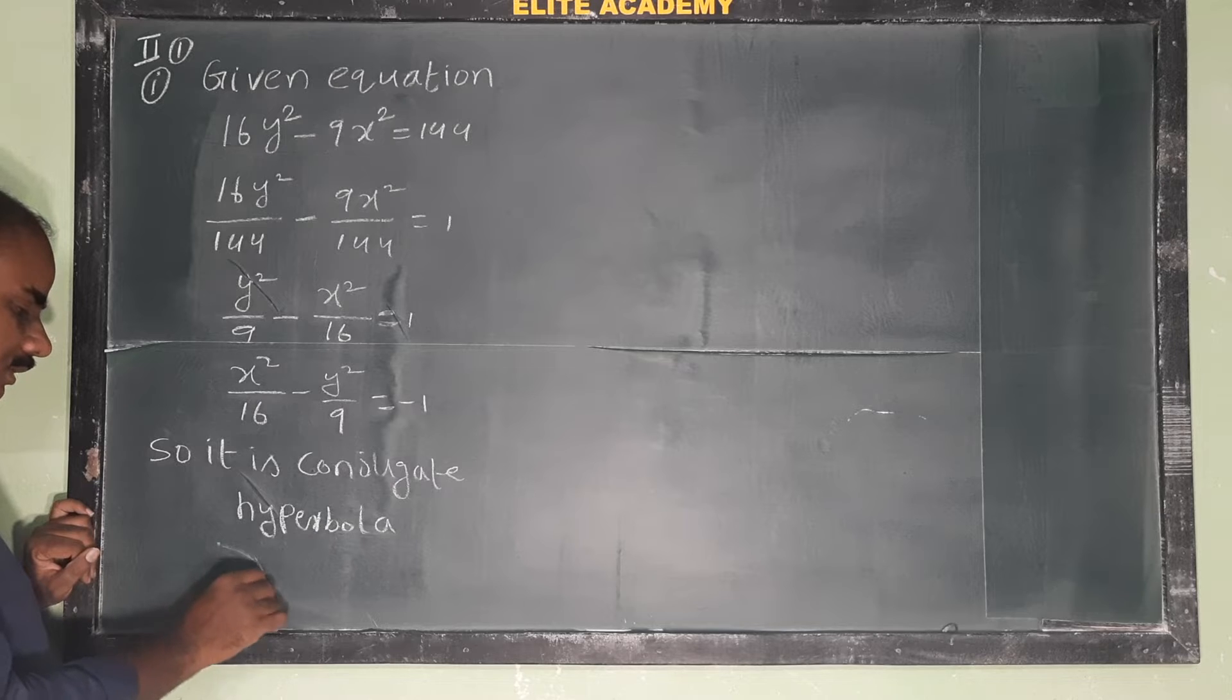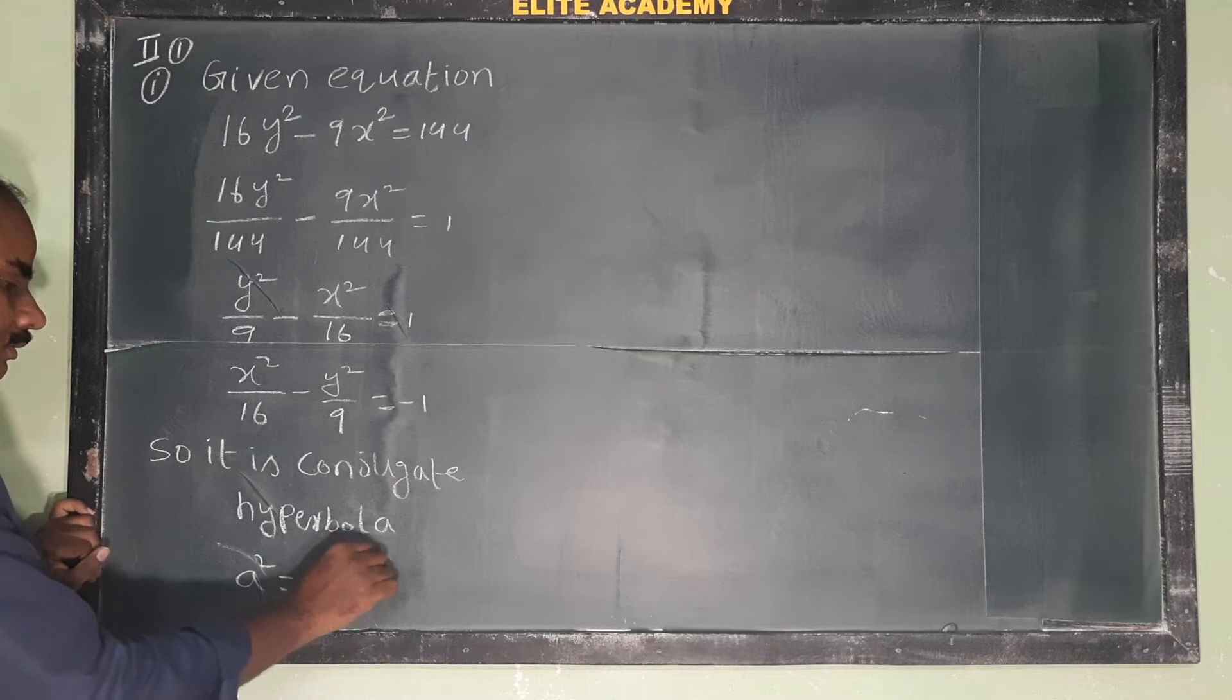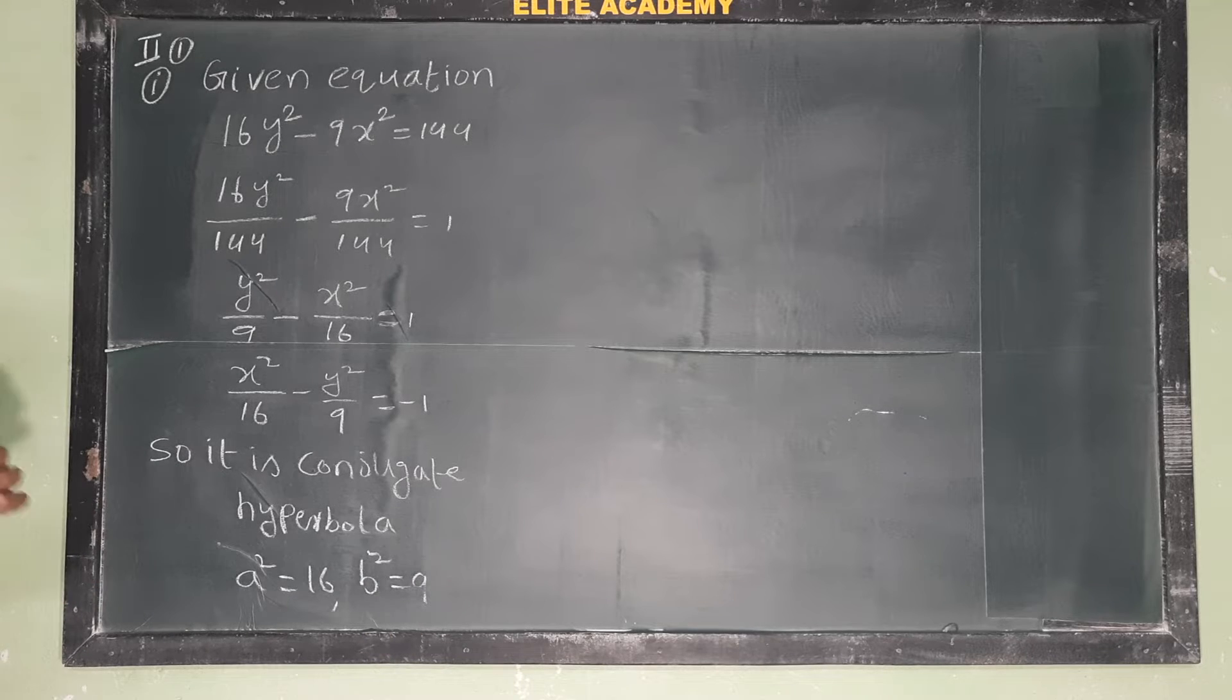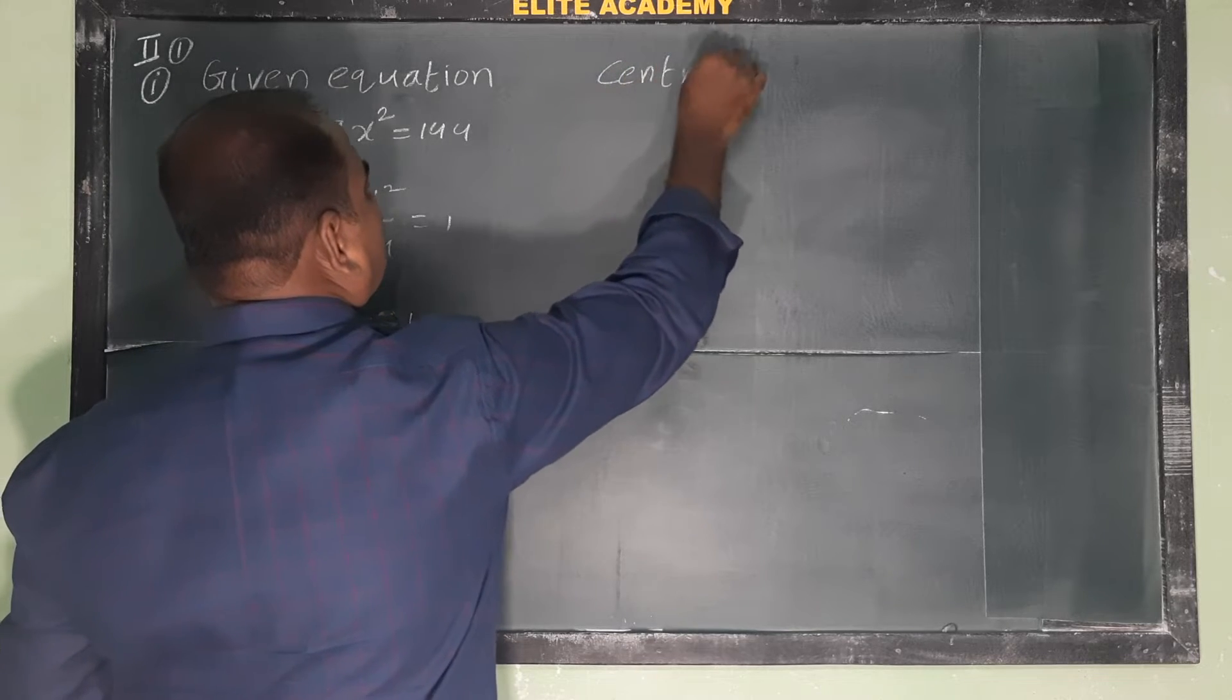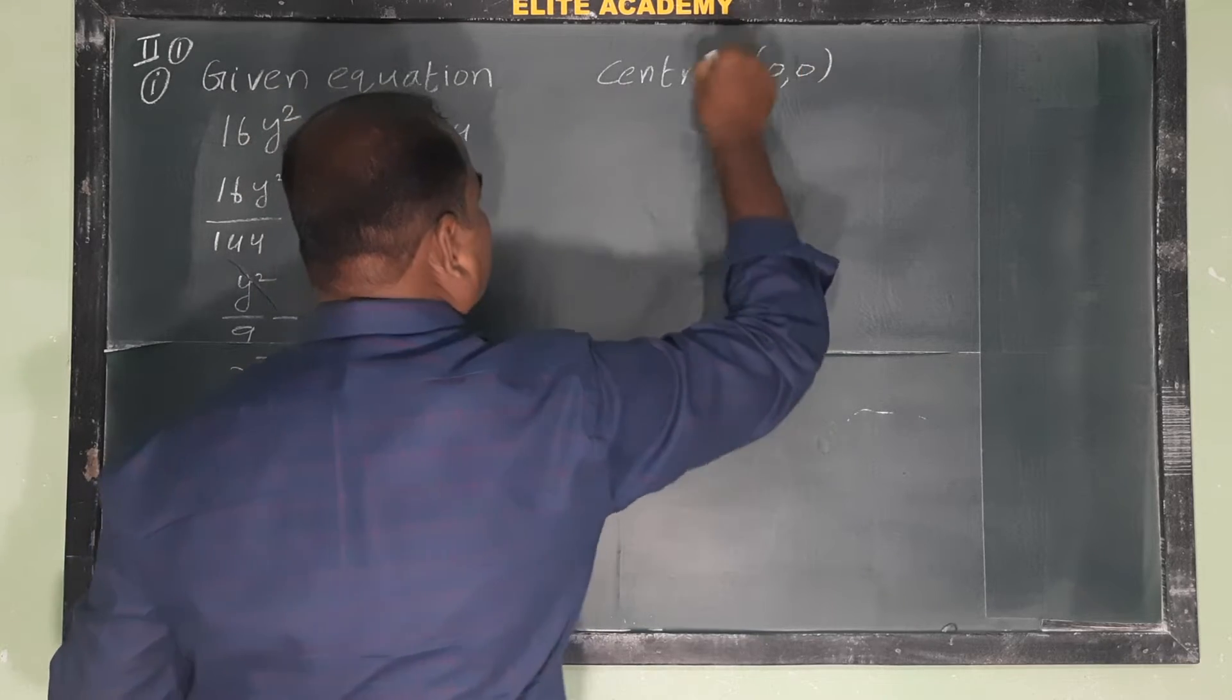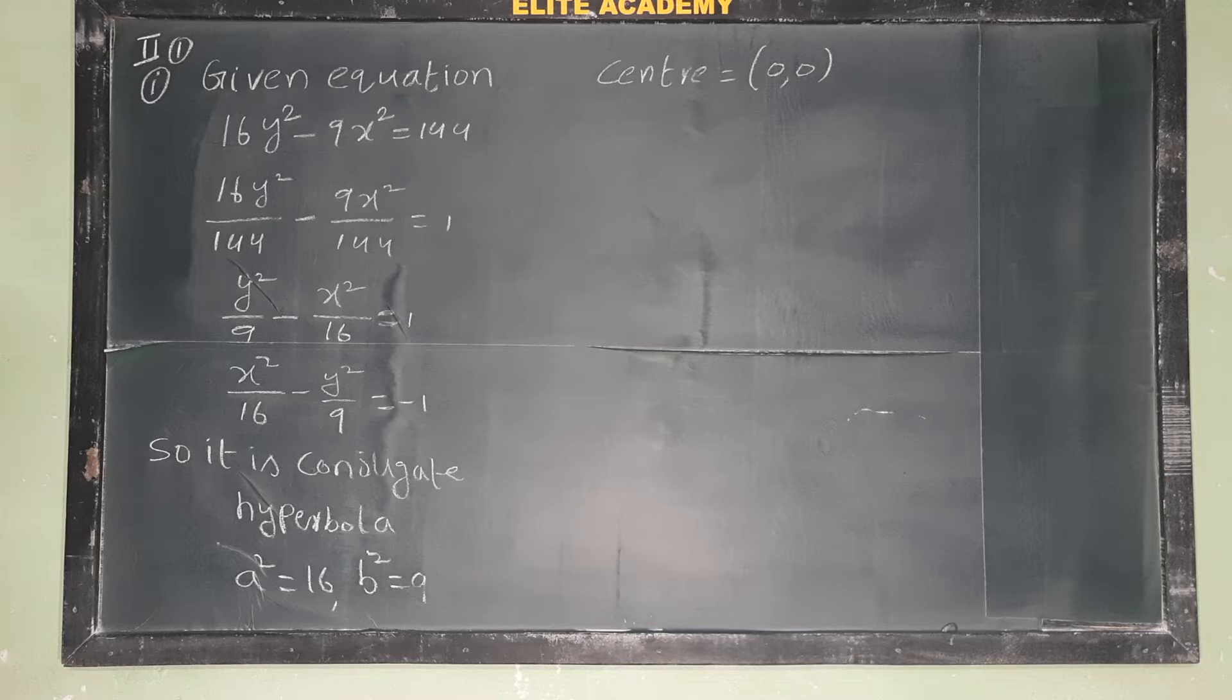Equal to minus 1 means conjugate hyperbola; equal to plus 1 would be standard hyperbola. Using the standard formula calculation: a² = 16, b² = 9. The center is at (0,0).